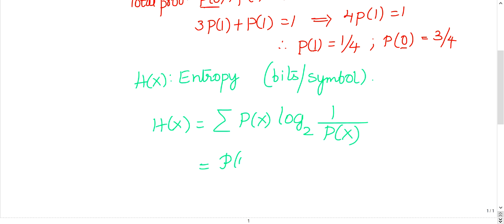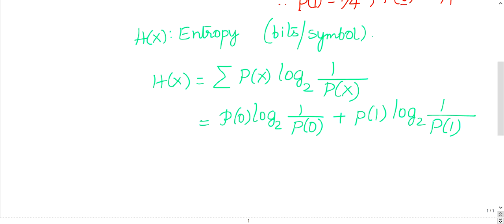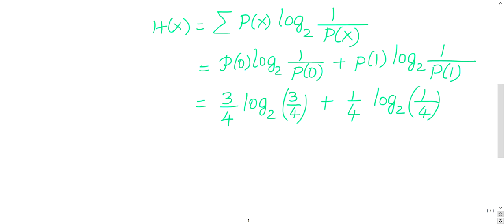This is p of zero log base 2, 1 by p of zero, plus p of 1 log base 2, 1 by p of 1. Directly substitute the values. This is 3 by 4 log base 2, 3 over 4, plus 1 by 4 log base 2, 1 by 4. On simplifying, you get 0.84 bits per symbol.